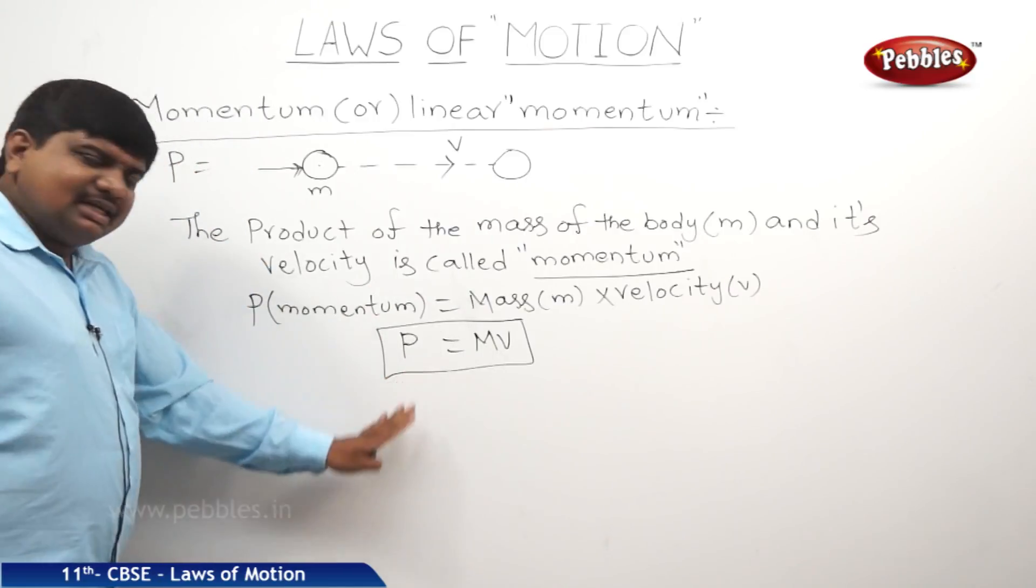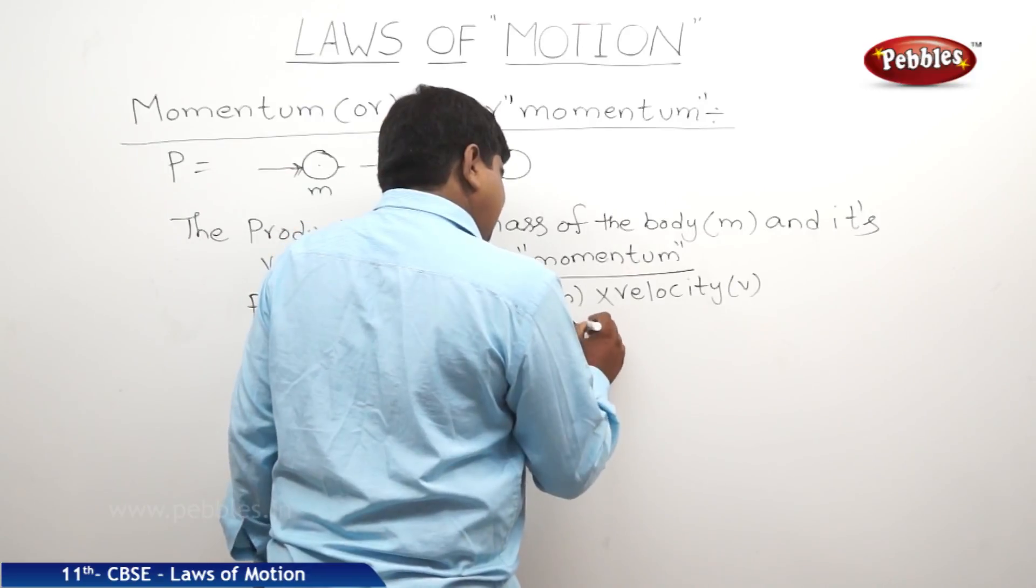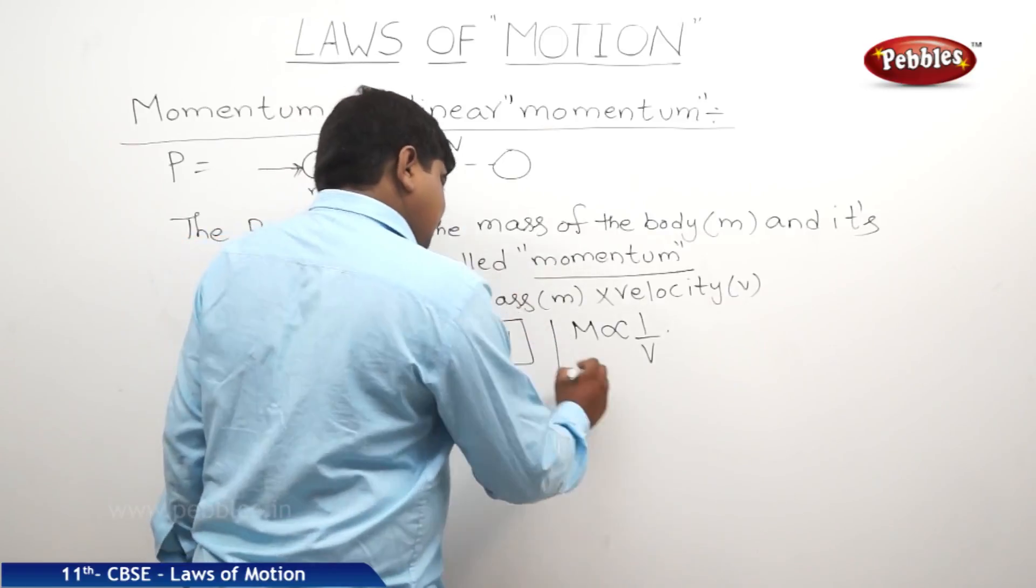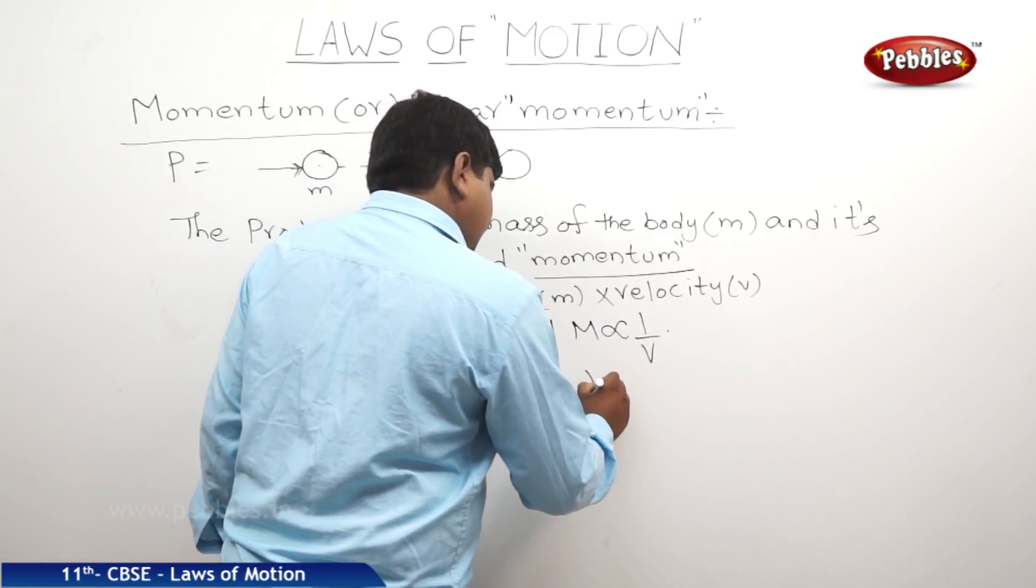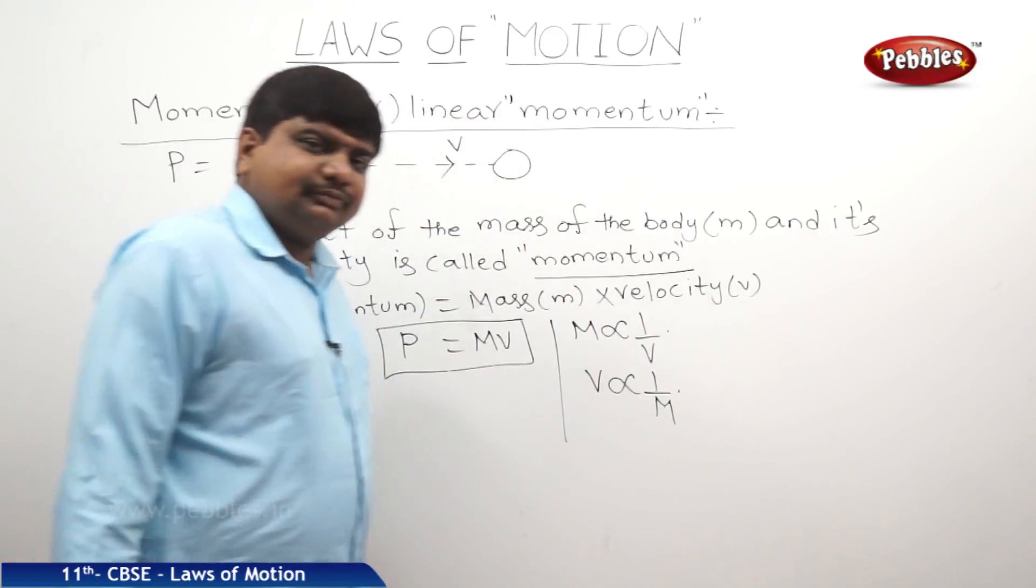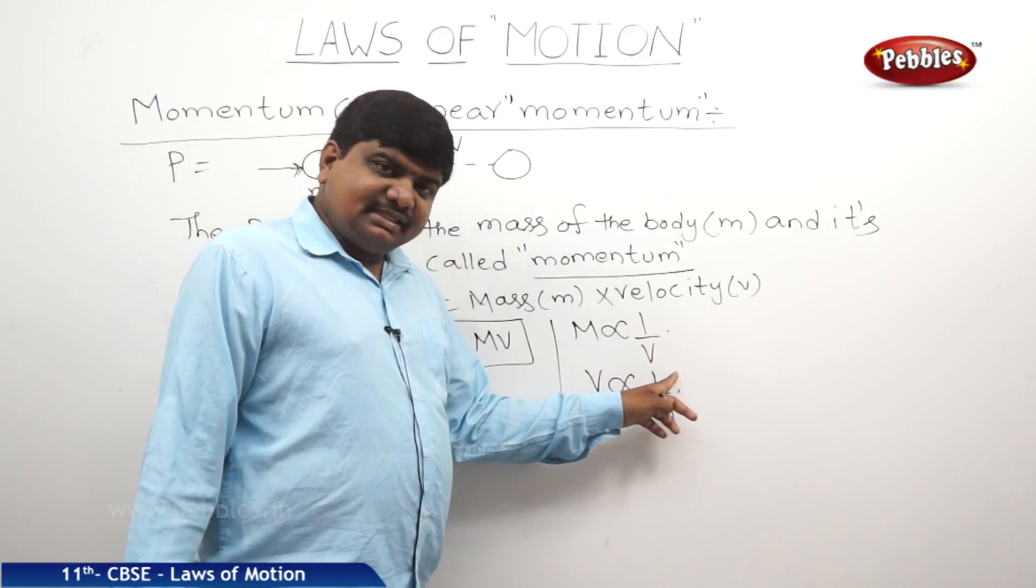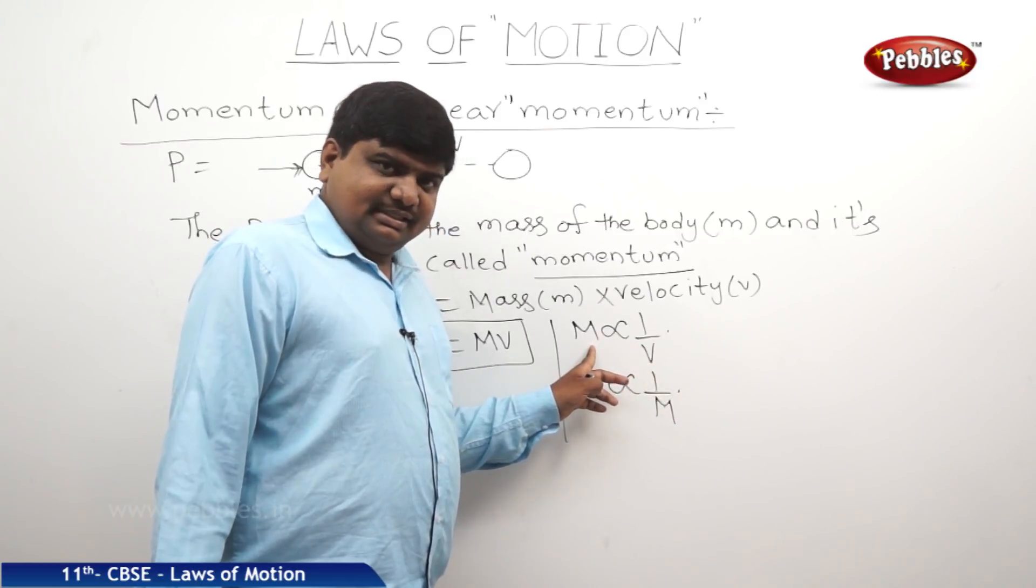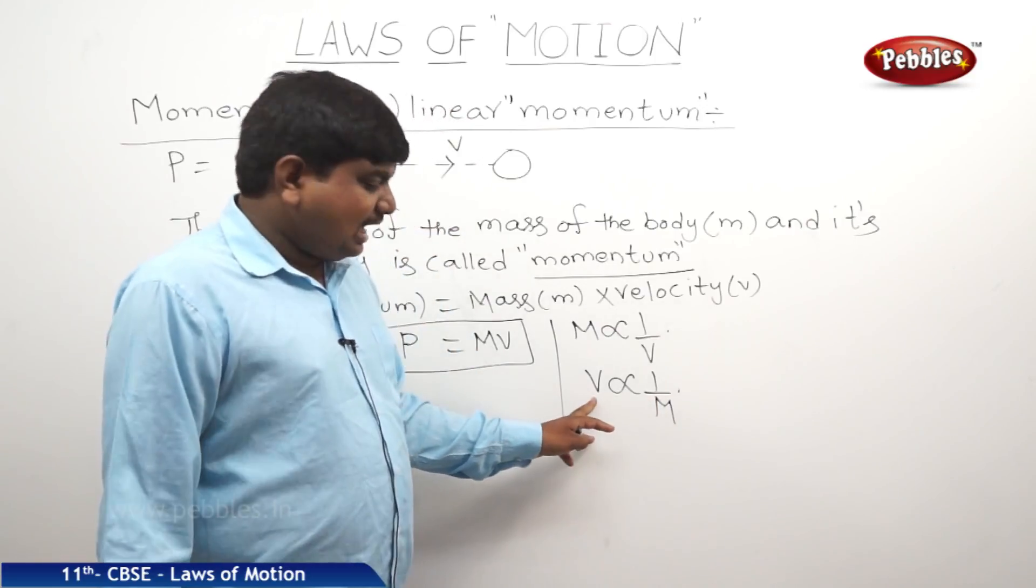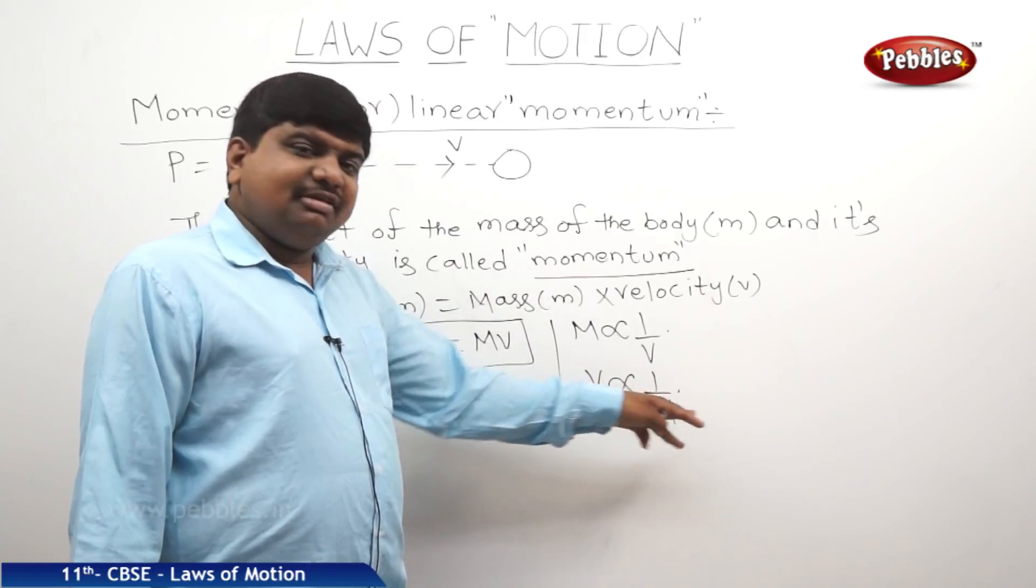But what we can understand is if momentum is constant, m is proportional to 1 by v, or v is proportional to 1 by m. That means if velocity of the body is less for the higher mass objects. Or if the mass of the body is very high, then the attaining velocity will be less. Anyway, this mV will be constant.